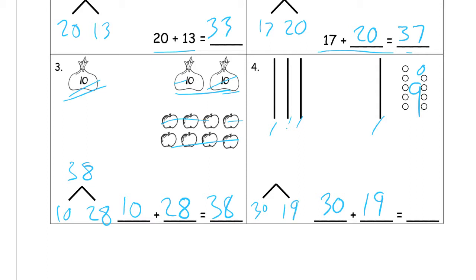And our whole, you might just already know it, but we can just count it. It's 10, 20, 30, 40, and 9 is 49. So our total is 49 for our number sentence.